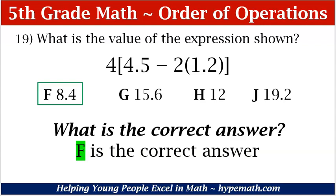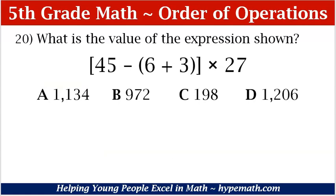Let's move to problem number 20. What is the value of the expression shown? We have, in brackets, 45 minus, in parentheses, 6 plus 3, times 27. Our answer choices are A. 1134, B. 972, C. 198, D. 1206.